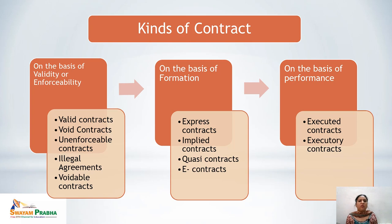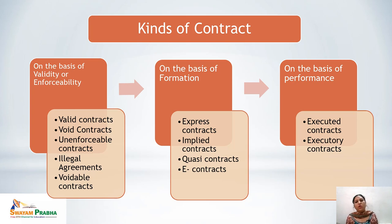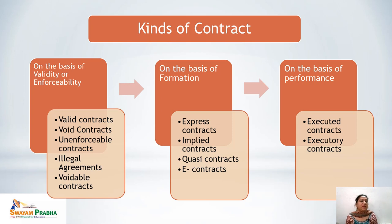Unenforceable contracts are those which, because of some technical defect, cannot be enforced. For example, in property transactions, certain government stamps are required on the relevant papers. Even if every other element of Section 10 of the Indian Contract Act 1872 is present, if the mandatory stamping is missing, the contract cannot be enforced. These are known as unenforceable contracts.